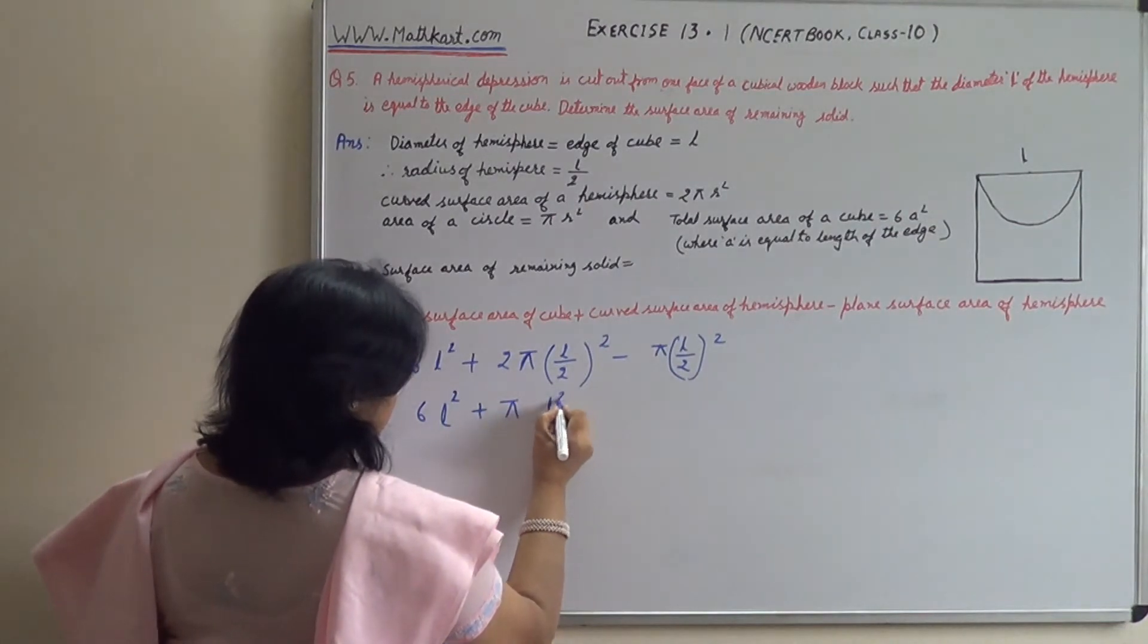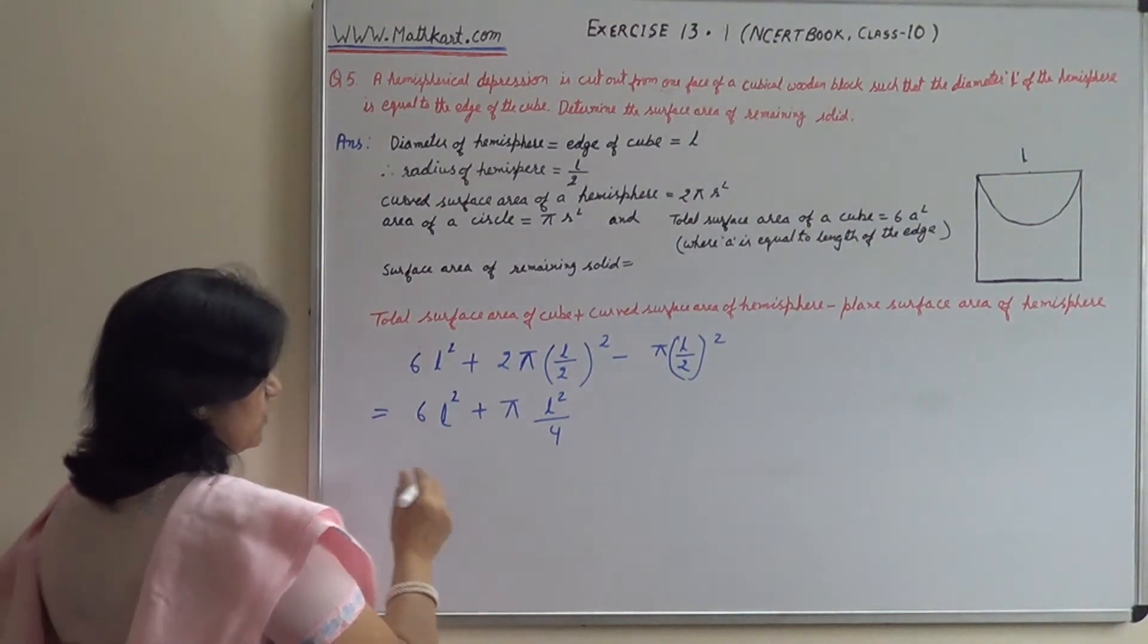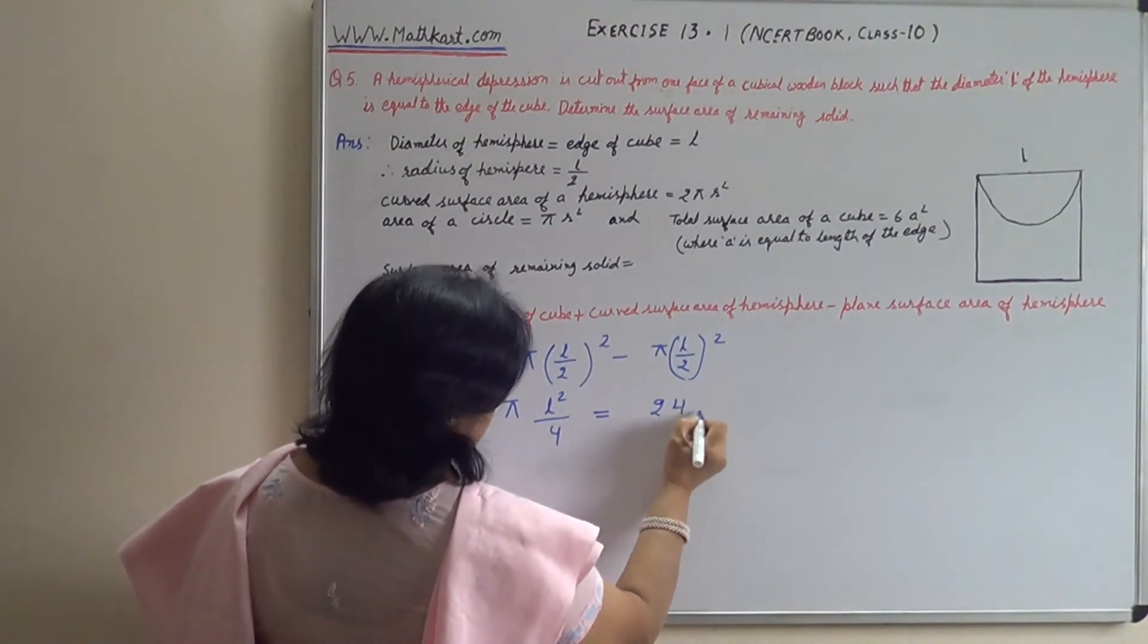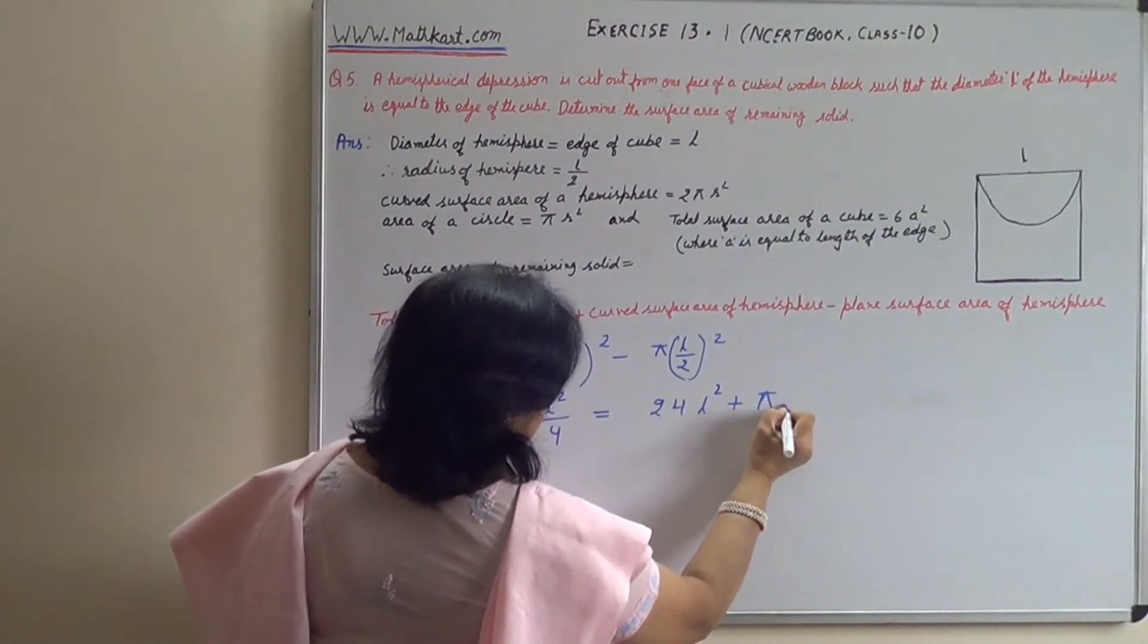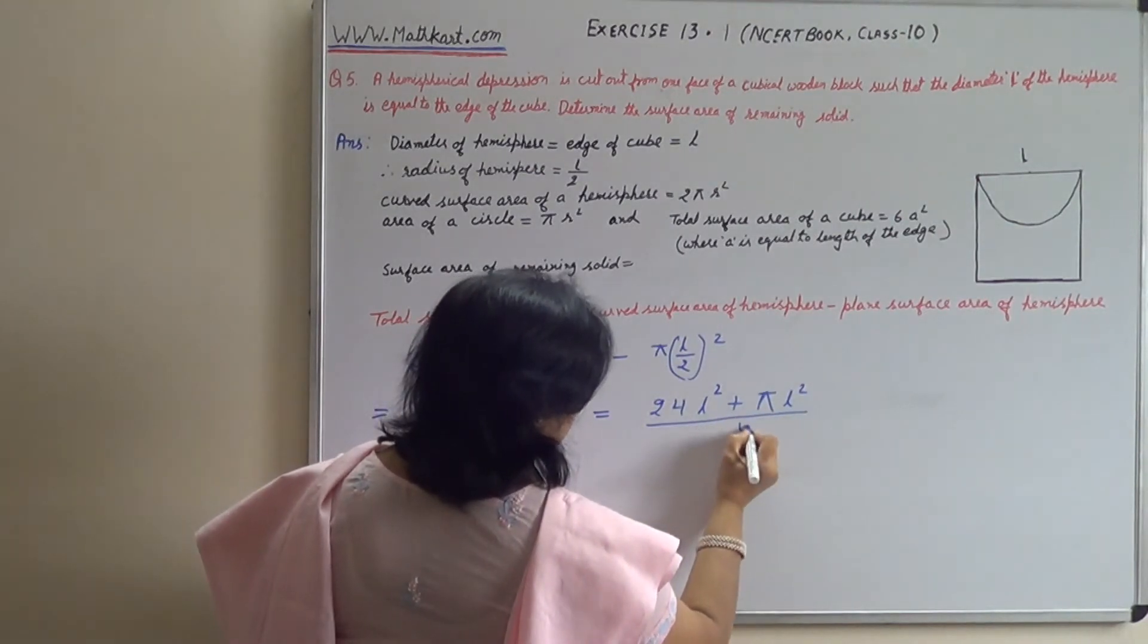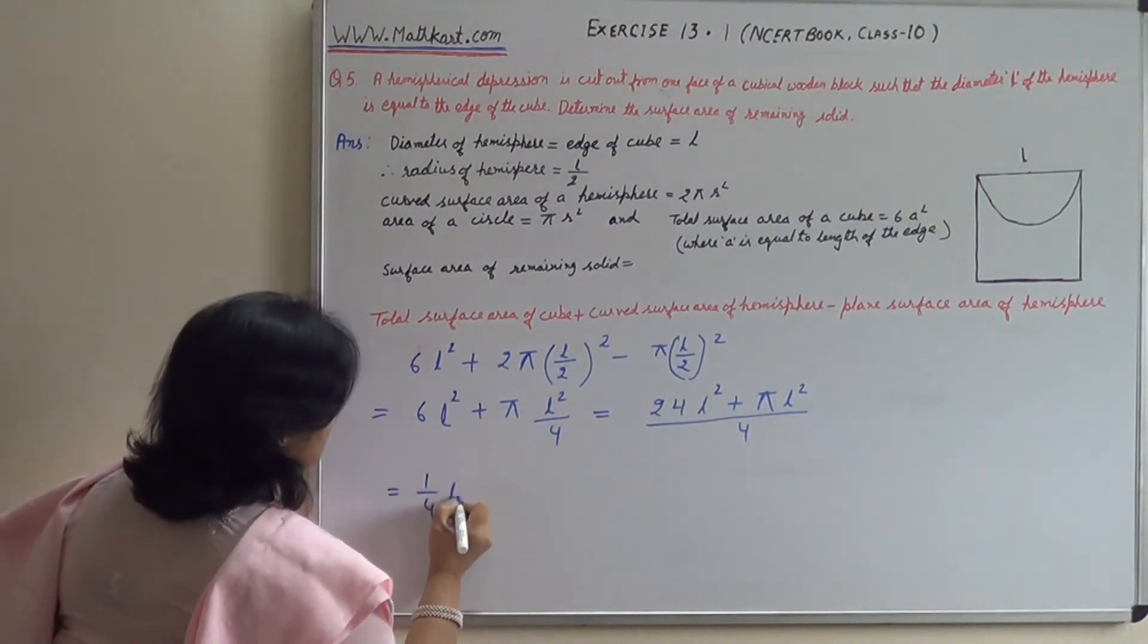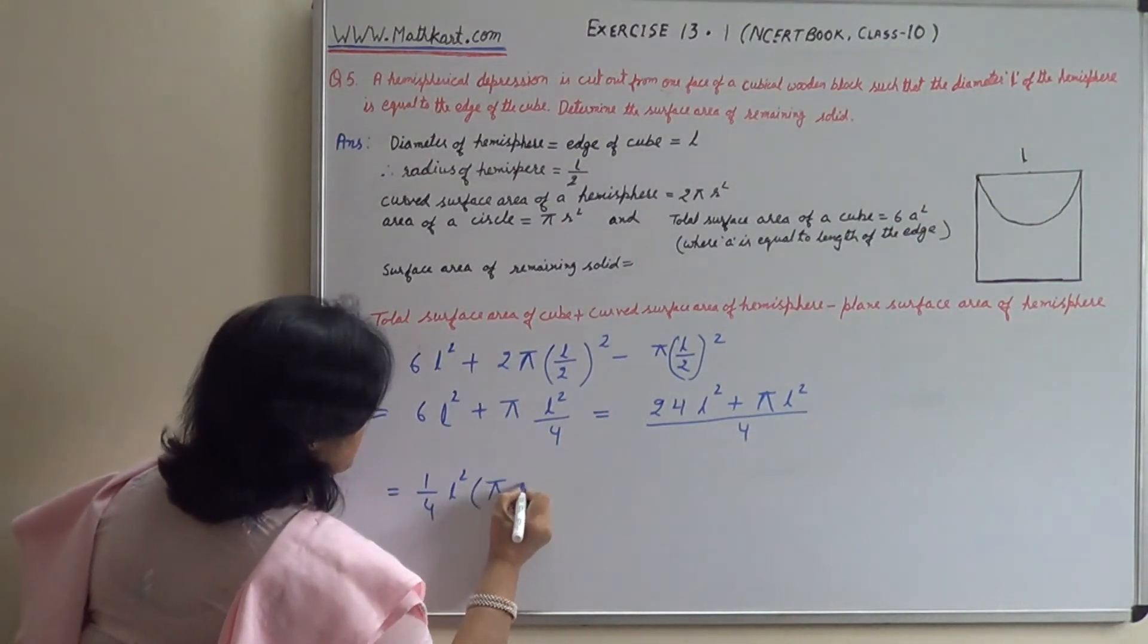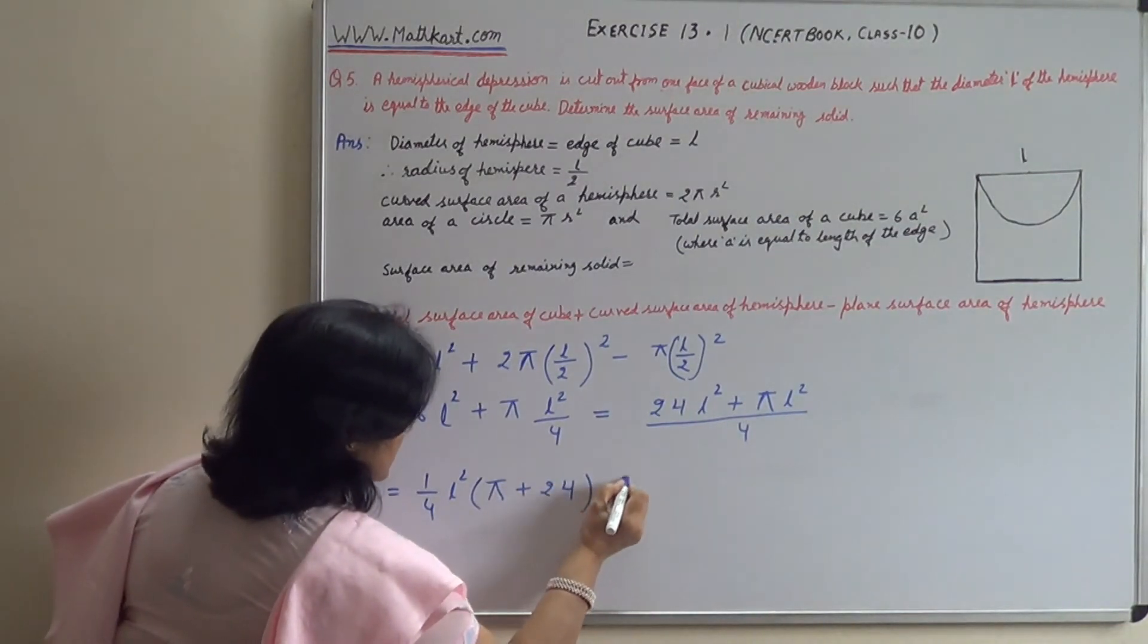Now taking 4 as common denominator, this becomes 24 L squared plus pi L squared upon 4. So this becomes 1 upon 4 L squared into pi plus 24. And this is your answer.